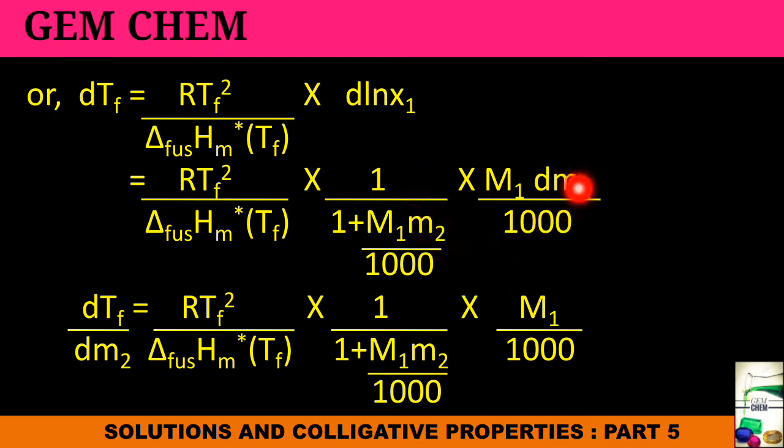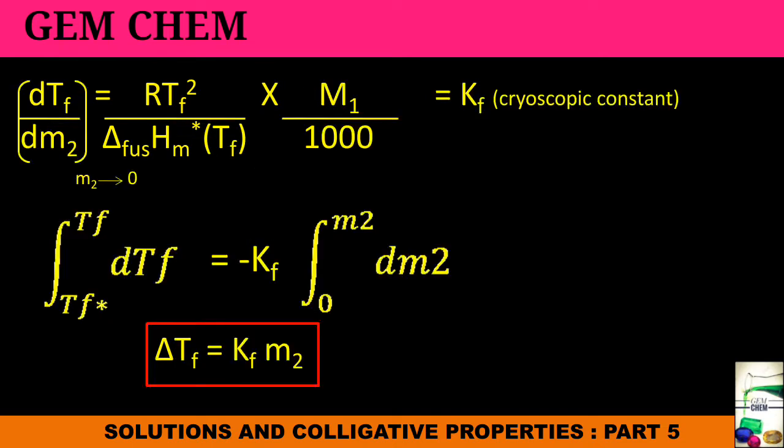On further deriving the mole fraction using simple formulas of molarity, we can get this expression. Now this DM2 is being taken in the left hand side, so ultimately this expression is being obtained. DTF by DM2 equals RTF square by Delta H fusion into M1 by 1000. This particular expression is equal to our cryoscopic constant which is KF.